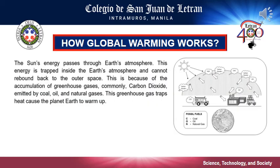How global warming works: the sun's energy passes through Earth's atmosphere. This energy is trapped inside the Earth's atmosphere and cannot rebound back to outer space. Greenhouse gases increase the temperature of the planet by not allowing the heat to escape. When the temperature starts to change rapidly, it becomes more concerning. The Earth is wrapped by a layer of heat-trapping gases. Whenever these gases enter the atmosphere, it acts similar to a blanket, which traps heat into the atmosphere and then alters climatic conditions globally.